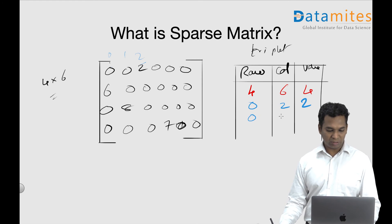This one is zero, so the row is actually one, the column is zero, and the value is six. And then the third one: row is actually two, the column is one, the value is eight. And then the last one: row is three, column is three as well, and the value is seven.